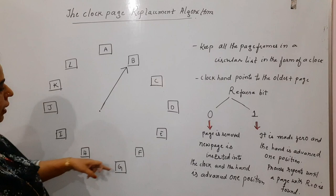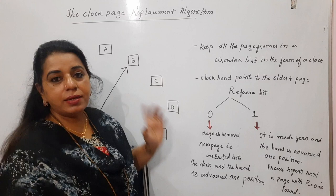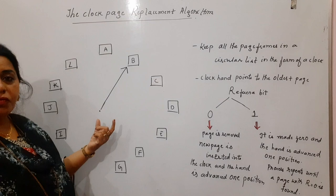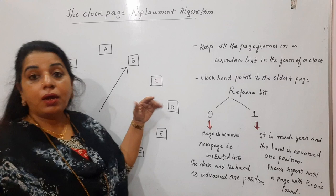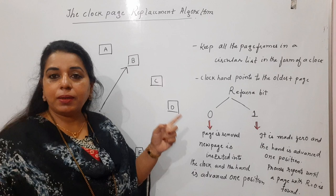These pages are arranged in a circular list. Remember: keep all the page frames in a circular list in the form of a clock. All the pages are arranged in a circular list, and the clock will have a hand. The clock hand points to a particular page — specifically, it points to the oldest page.